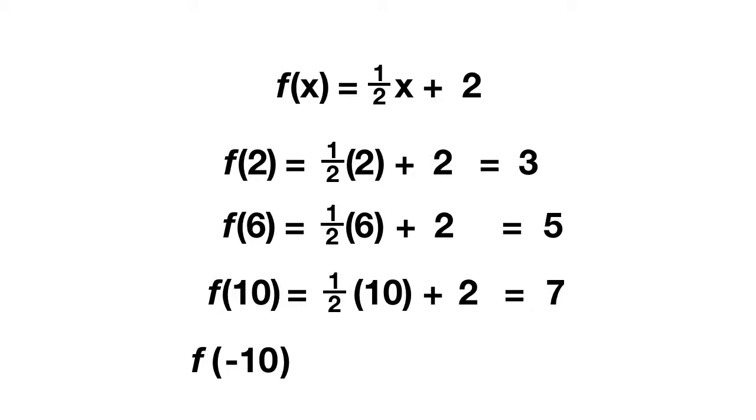Finally, we could do this for f of negative ten. This will equal half times negative ten plus two. What does that equal? Well, half of negative ten is negative five, and negative five plus two, that just gives us negative three.